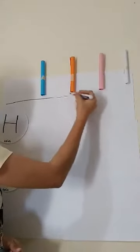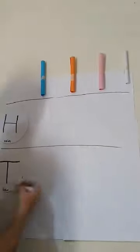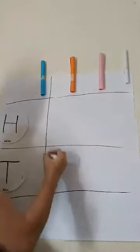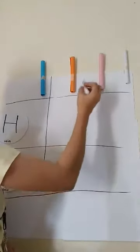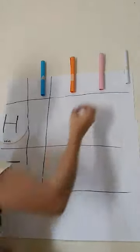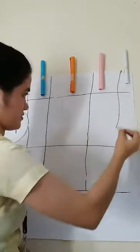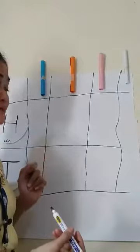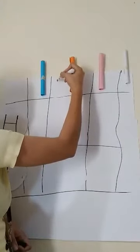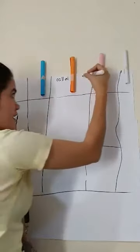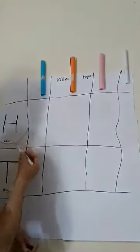Now it's time for us to make our area model, or the table of values. As you can see, I already have all the samples pasted. We have to make a table. I forgot — we must put a label. This side must be the rolled papers, and this side is our coin.